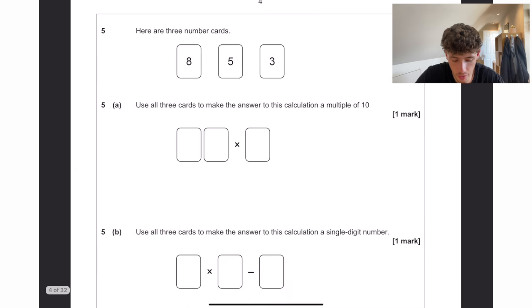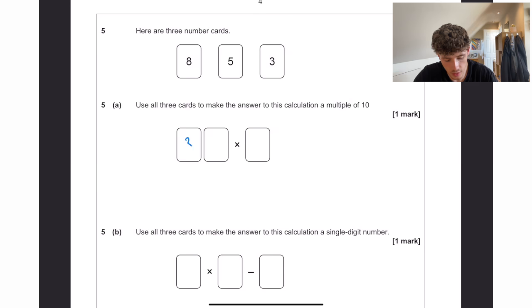Here are three number cards. Use all three cards to make the answer to this calculation a multiple of 10. That would have to be 38 times by 5 because 8 times 5 is 40 and that ends in a 0.